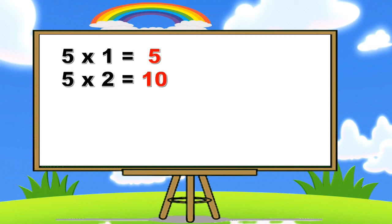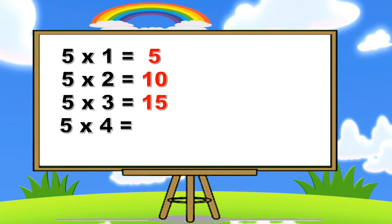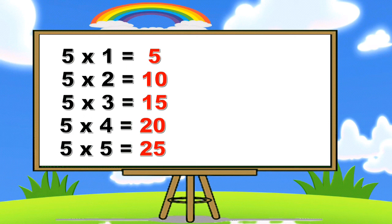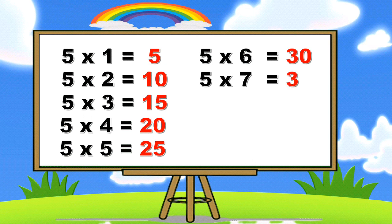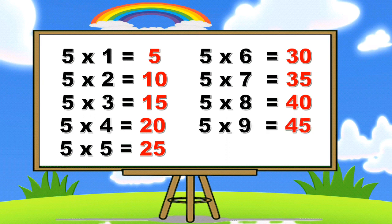Five ones are five. Five twos are ten. Five threes are fifteen. Five fours are twenty. Five fives are twenty-five. Five sixes are thirty. Five sevens are thirty-five. Five eights are forty. Five nines are forty-five. Five tens are fifty.